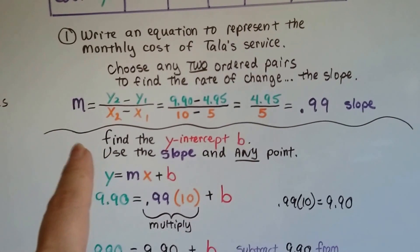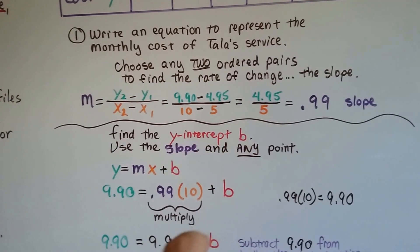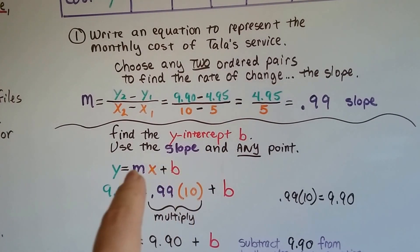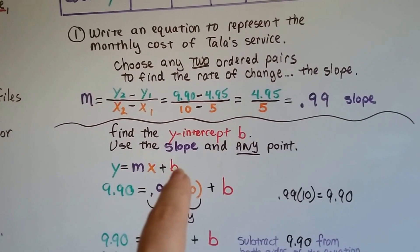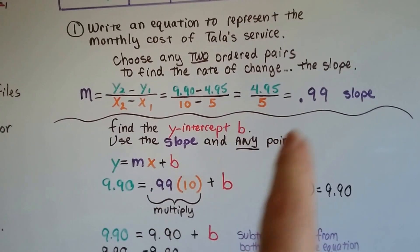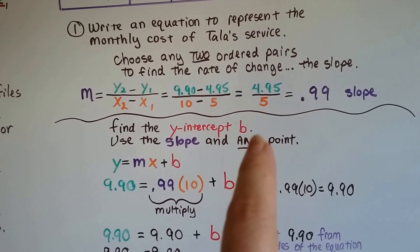Now we need to find the y-intercept b for the equation. So we know our slope is .99, we need to find the b. The way we do that is we use that slope, .99, in any point.